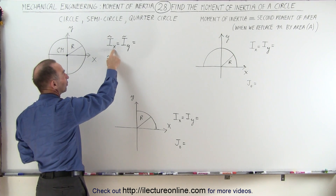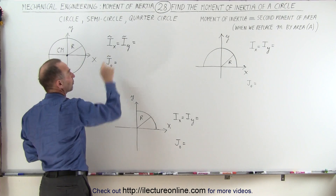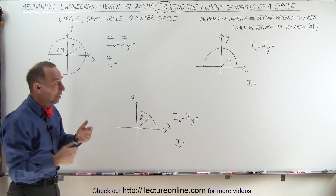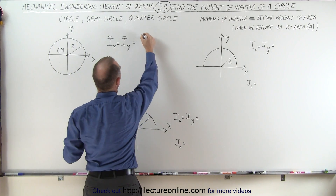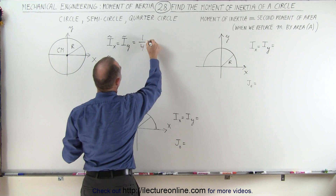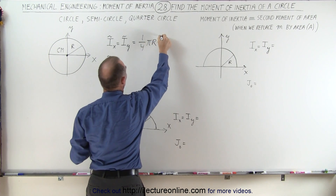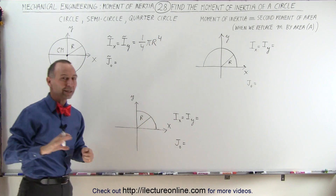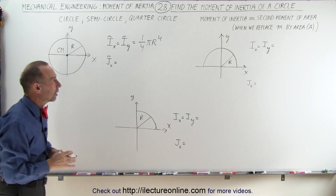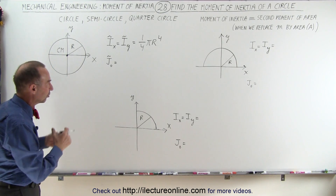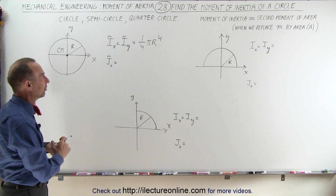The moment of inertia relative to the x-axis should equal the moment of inertia relative to the y-axis, and it turns out it is equal to one-quarter pi times the radius to the fourth power. We'll show you later how we actually derive that equation, but for now it's sufficient to just say that's what it is and we'll memorize that.